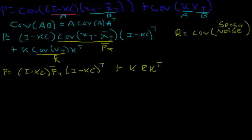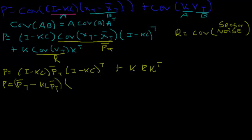We've simplified things a bit, but we're trying to solve in terms of K, so let's expand this multiplication out. p equals p_bar(t) minus KC p_bar(t), multiplied by (I minus KC) transpose, which is (I minus K transpose C transpose). Expanding fully: p equals p_bar(t) minus K transpose C transpose p_bar(t), minus KC p_bar(t), plus KC K transpose C transpose p_bar(t), plus KRK transpose.